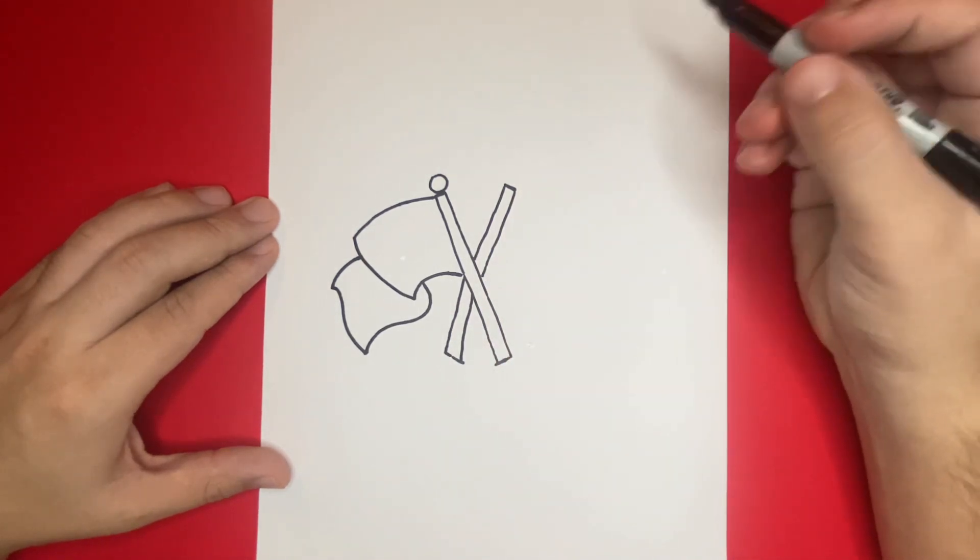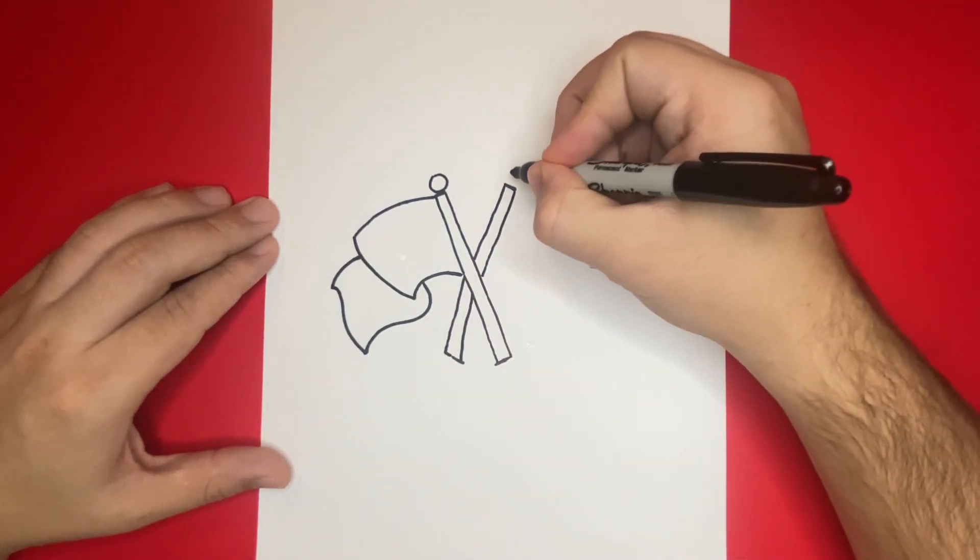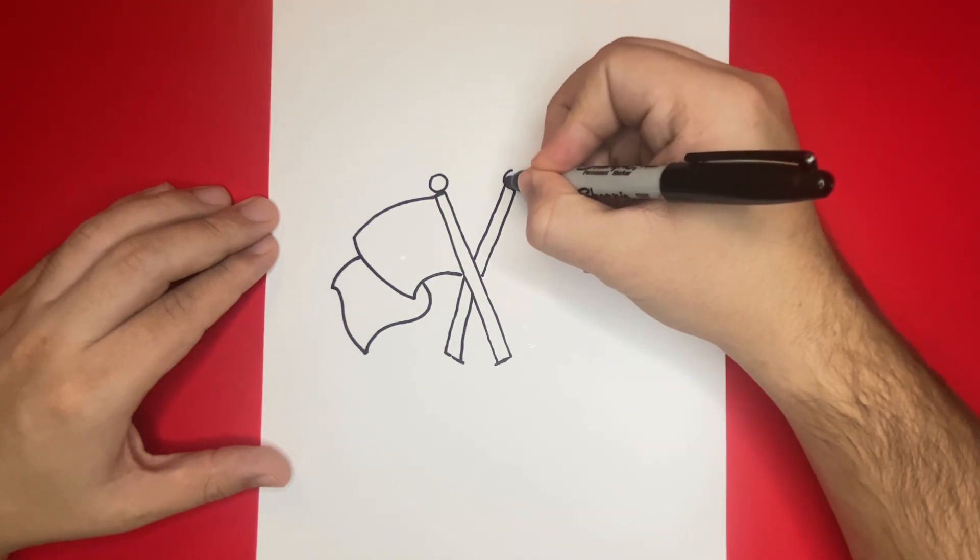So let's go ahead and draw a circle on the very top of the shape that we just made, similar to the first one as well.